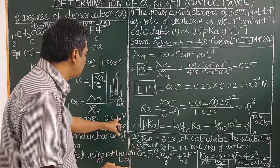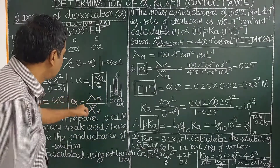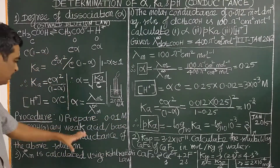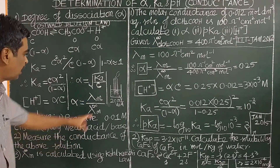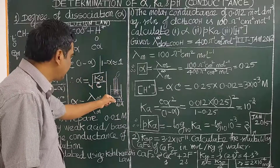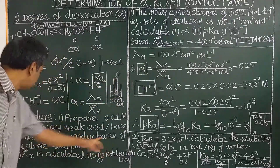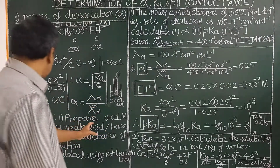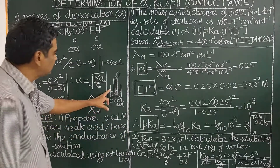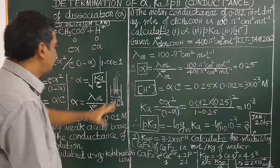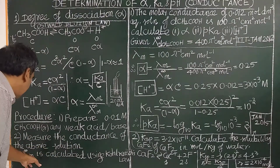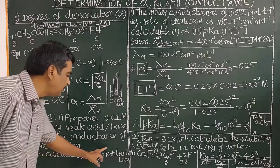Prepare 0.01, 0.02, or 0.05 molar solutions of the weak acid or weak base. Place the conductivity cell in the beaker containing the solution and measure the conductance. The molar conductance at infinite dilution (Λm∞) is then calculated using Kohlrausch's law.